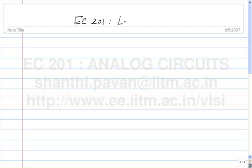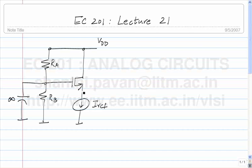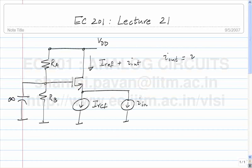EC 201 lecture 21. Yesterday we looked at how we make an incremental current controlled current source, which is why we stopped yesterday. We came up with what is commonly known as the common gate amplifier. If an incremental current I_in was injected here, then the total current in the drain is given by I_ref plus I_out, where I_out equals I_in, and this happens regardless of the gm of the device.